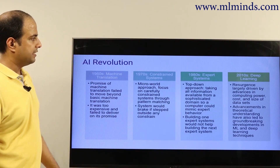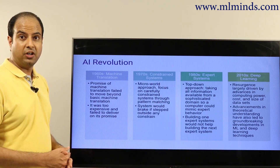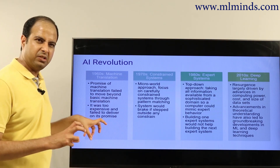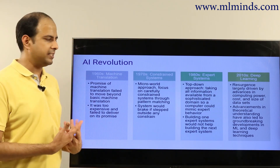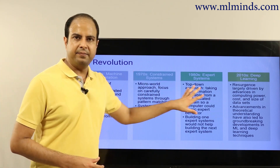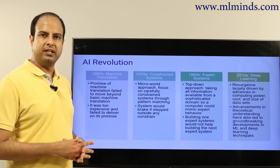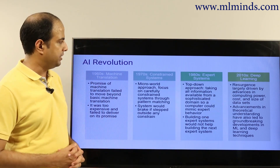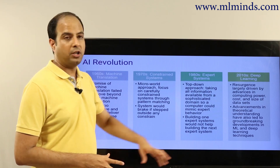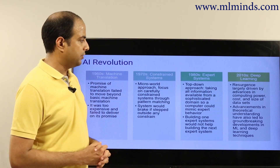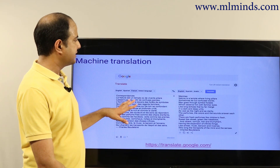The machine learning revolution has happened in stages. Work on machine translation already started in the 1960s, but the promise failed — it was too expensive and there was not enough labeled data. Over time the field has grown and evolved, and in the 2010s it blossomed into what is now known as deep learning — a specific part of machine learning that, thanks to new compute power and the availability of large datasets, has been successful in a variety of areas.